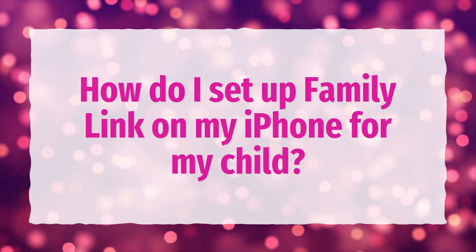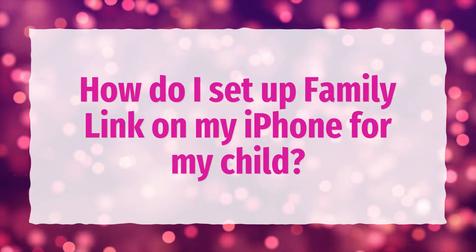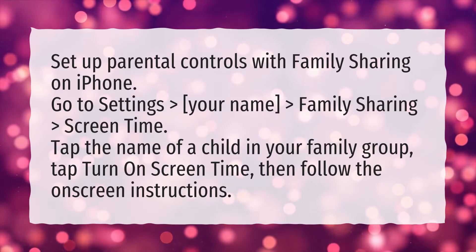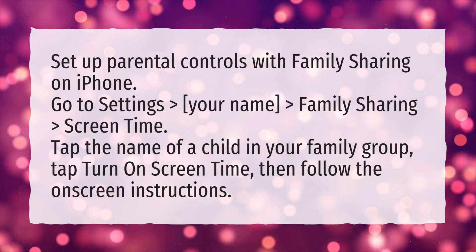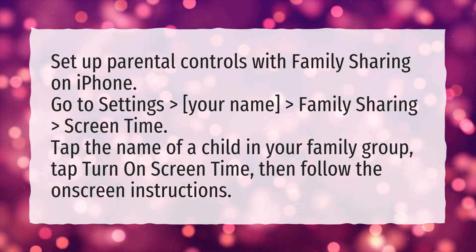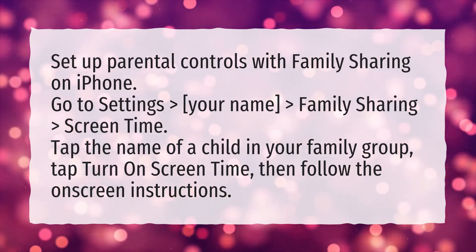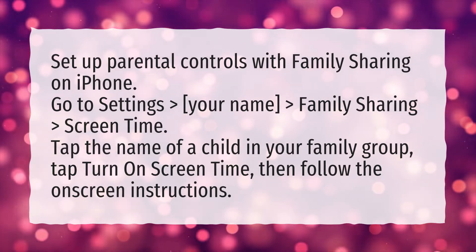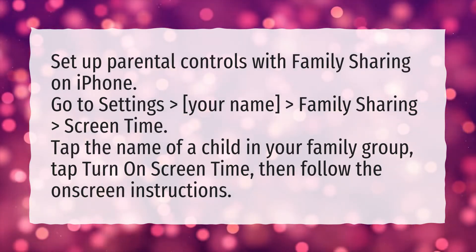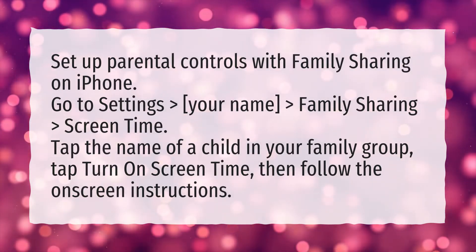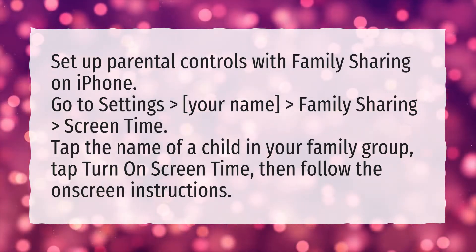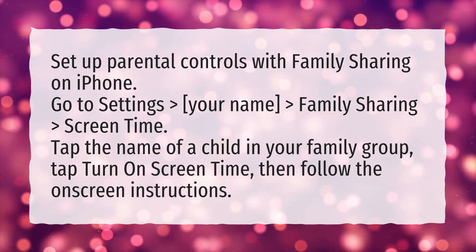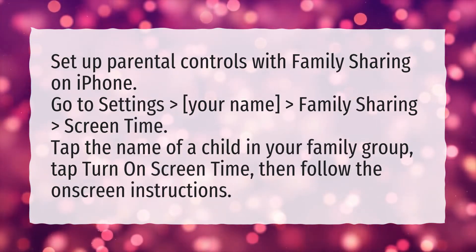How do I set up Family Link on my iPhone for my child? Set up parental controls with Family Sharing on iPhone. Go to Settings > Your Name > Family Sharing > Screen Time. Tap the name of a child in your family group, tap Turn On Screen Time, then follow the on-screen instructions.